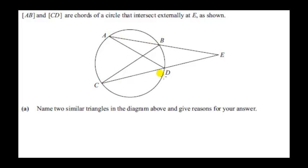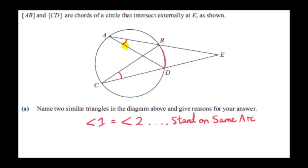AB and CD are chords of a circle that intersect externally at E. We want to name two similar triangles in the diagram. Looking at angles that are the same: these two angles are equal because they stand on the same arc — that's a theorem proved previously. We can call angle 1 as BAD and angle 2 as BCD.